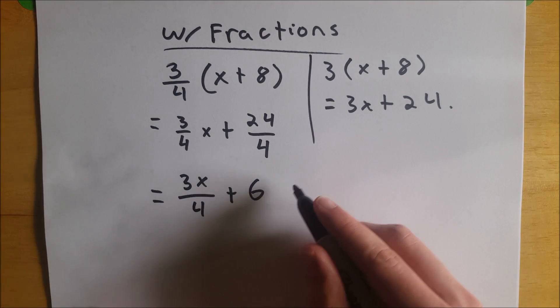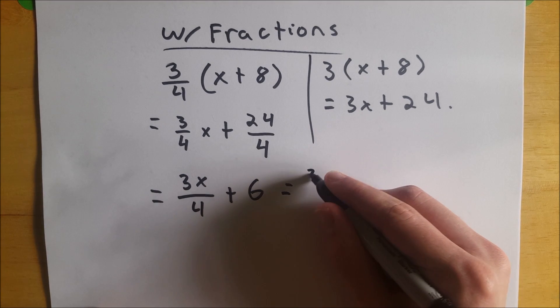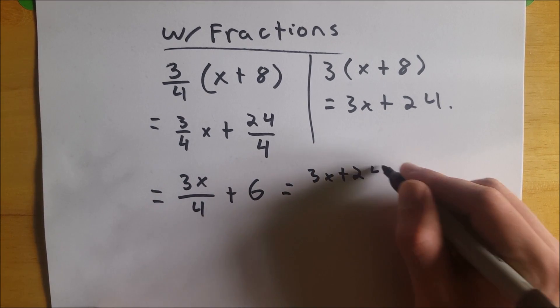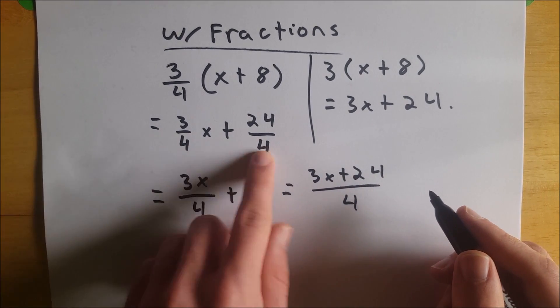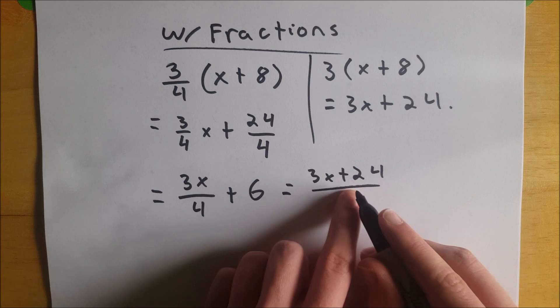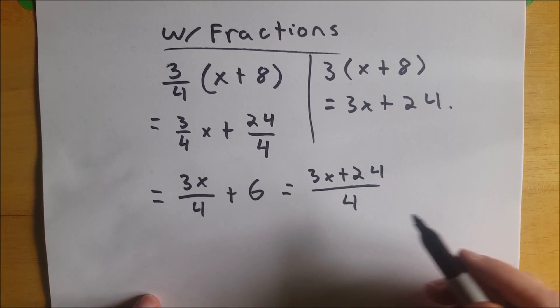Additionally, you could also write this, if you wanted to, as 3x plus 24 all over 4, because you can see here, they've got the common denominator. So we could just hop them right up to the numerator and write it like so.